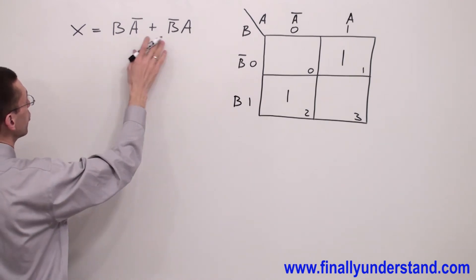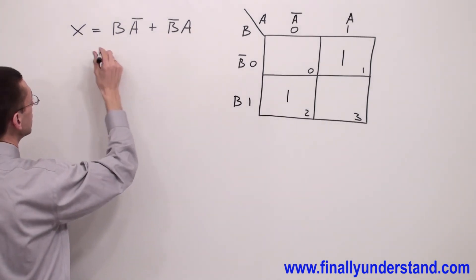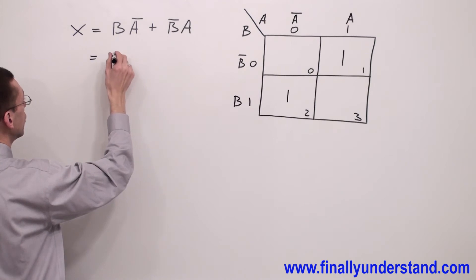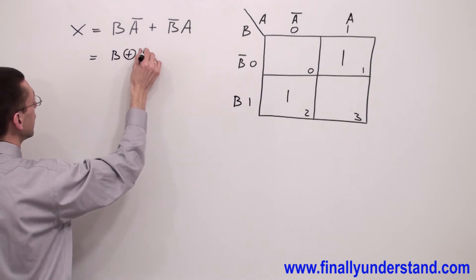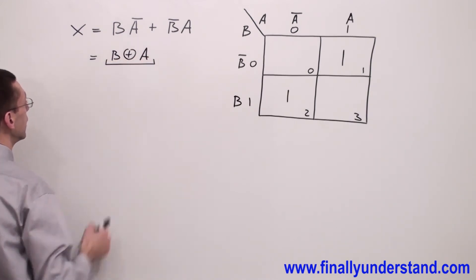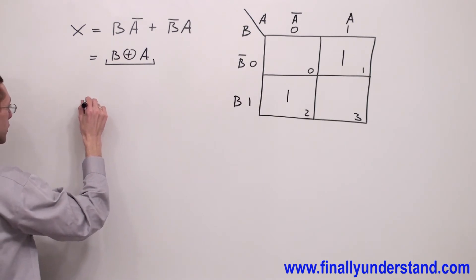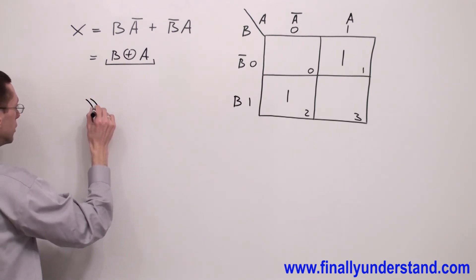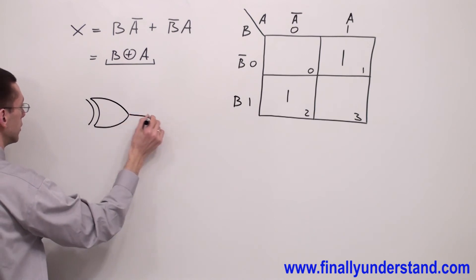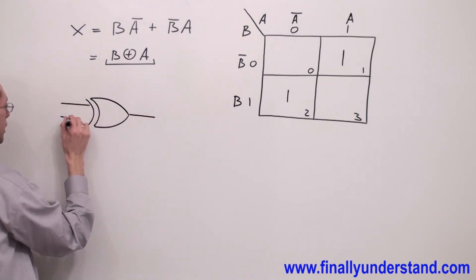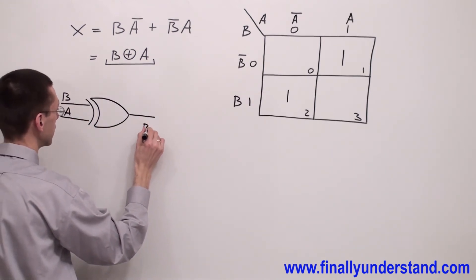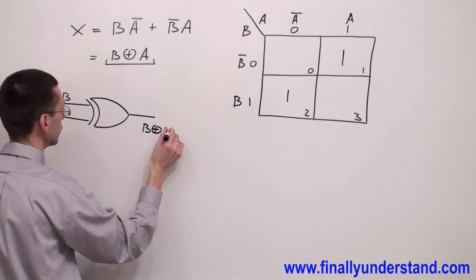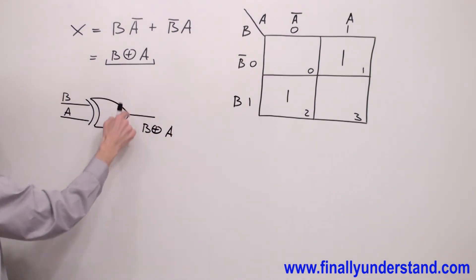So I cannot simplify this Boolean expression using the K-map, and I also cannot simplify this using Boolean algebra. But you should keep in mind that this expression is nothing else but the Exclusive OR. I can rewrite this as B Exclusive OR A. This is my Boolean expression, and if you want to implement it, this is nothing else but the Exclusive OR gate with inputs B and A, and at the output you are going to have B Exclusive OR A. These are the solutions to my problem. We have the next example.